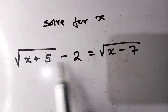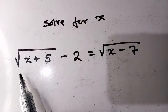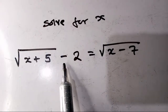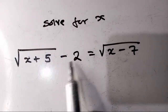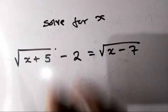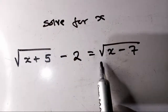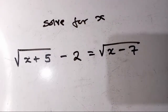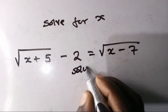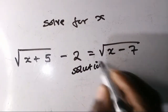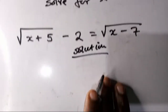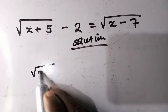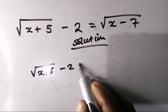For this question, we have the equation: root x plus 5 minus 2, which is equal to root x minus 7. Let's get started with the solution. Let's write the question first: root x plus 5 minus 2 equals root x minus 7.